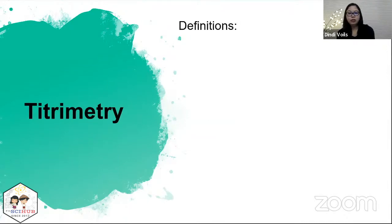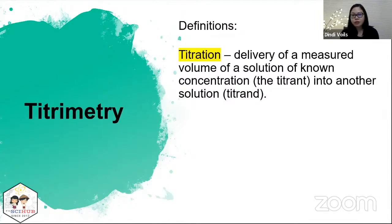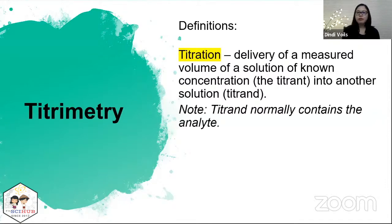Some terms we need to review: titration is the process of delivering a solution of known concentration into another solution. The solution of known concentration is called the titrant. Note that the titrant normally contains the analyte, but sometimes the titrant — the one with known concentration — is the analyte.